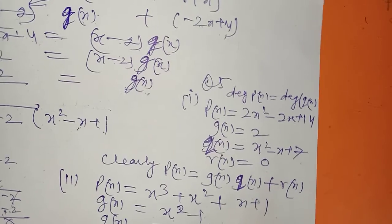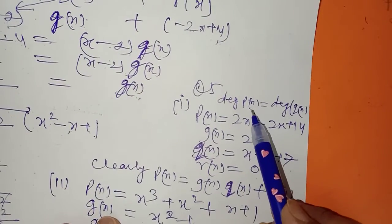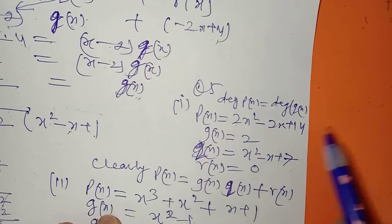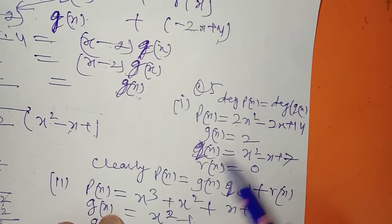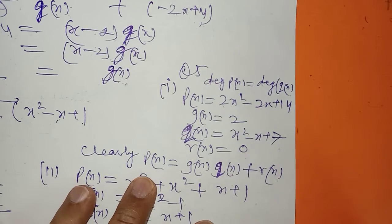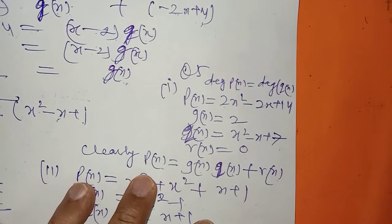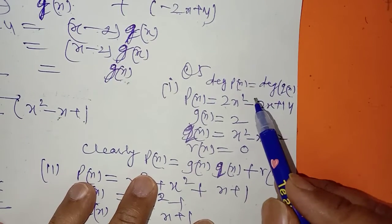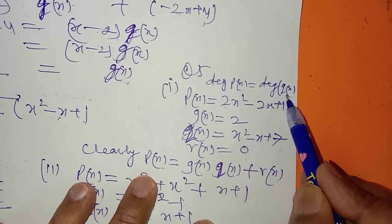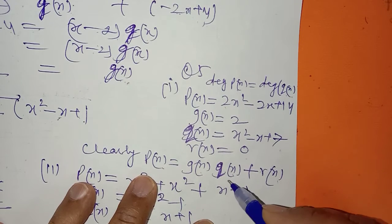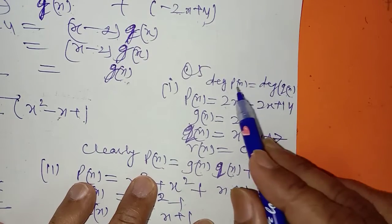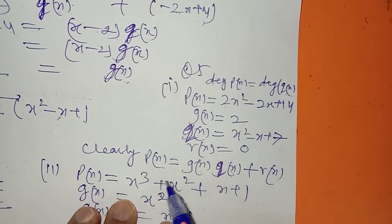In question number 5, you have to give an example in which the degree of p(x) and q(x) are same۔ تو میں نے ایک polynomial لے لیا جس میں dividend is equal to divisor into quotient plus remainder — یہ تو ہونا ہی چاہیے۔ The degree of p(x) and q(x) will be the same — quotient اور dividend کی degree same ہونے چاہیے۔